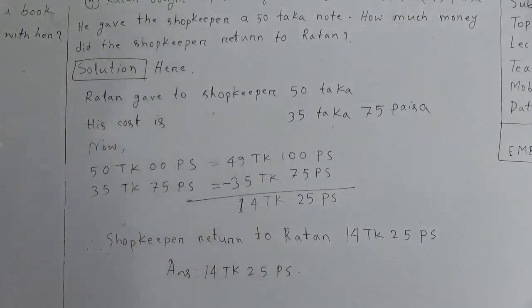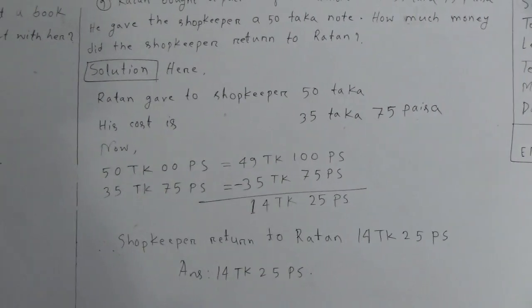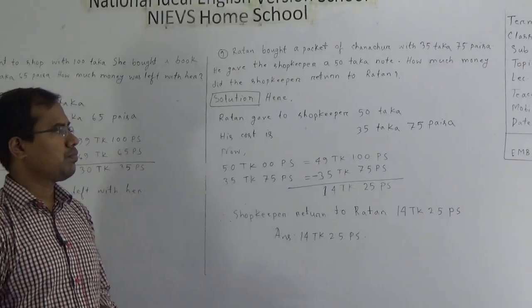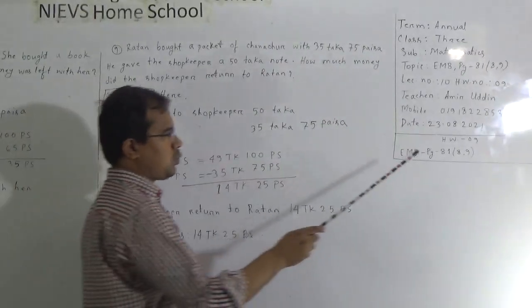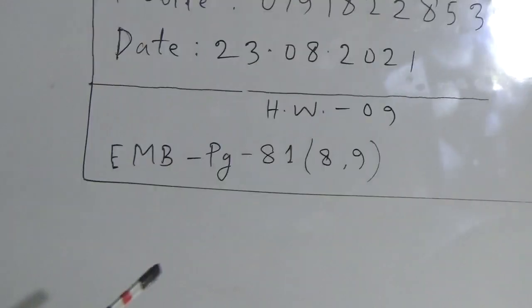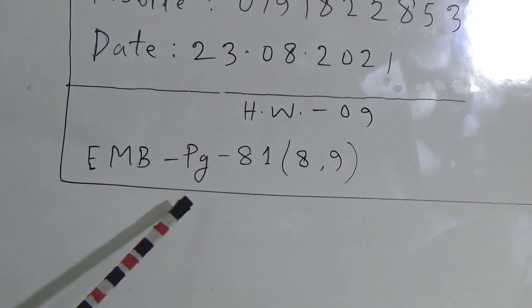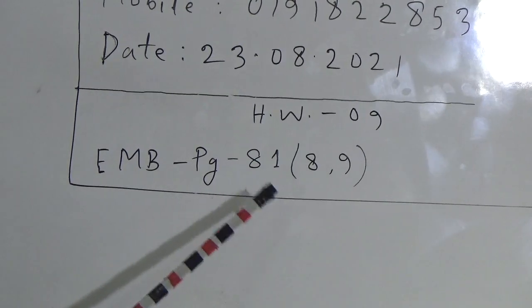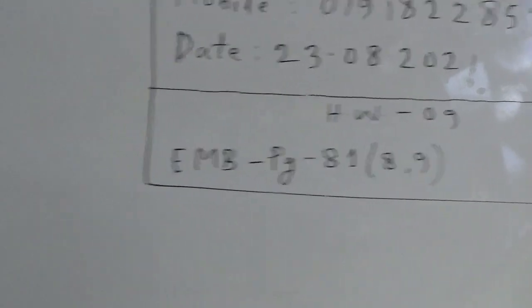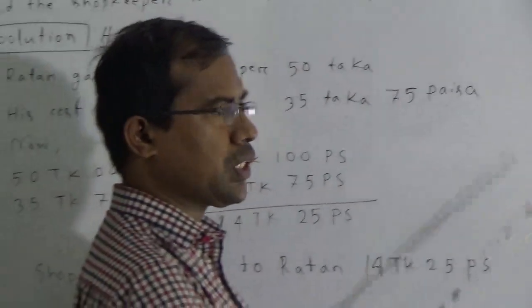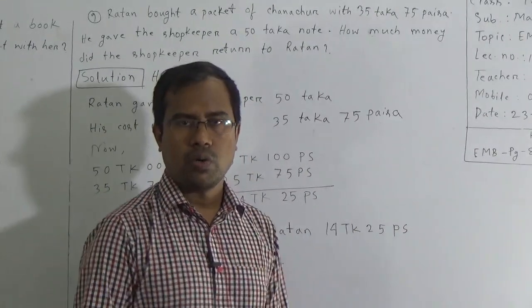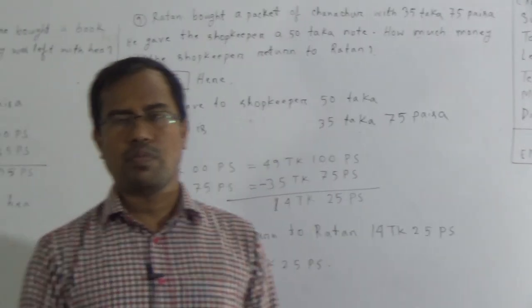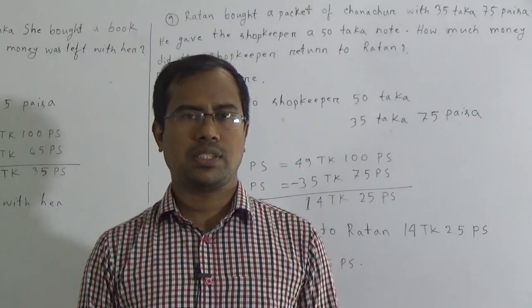Okay dear students, we have finished our today's class work. I think you have understood today's class. Practice more and more at home. Now I am giving you the homework. Our today's SW number 9 is from Elementary Mathematics book, page number 81, question number 8 and 9 — which we have already solved. So today's class work is your homework also. Do your homework properly and submit on next Saturday.